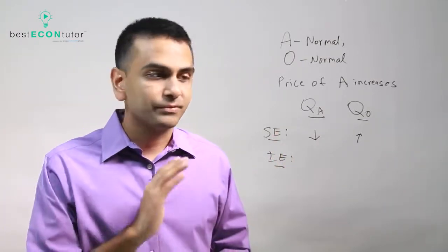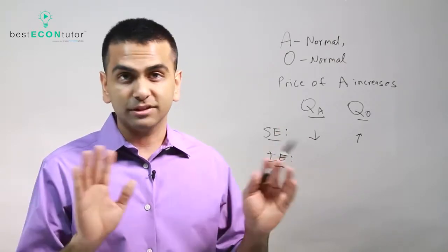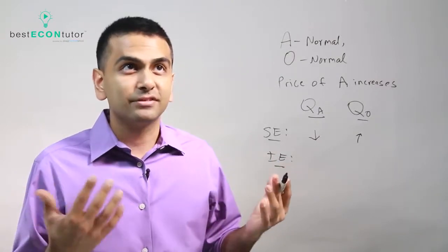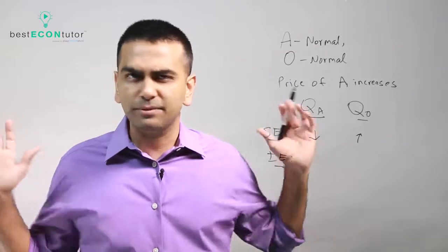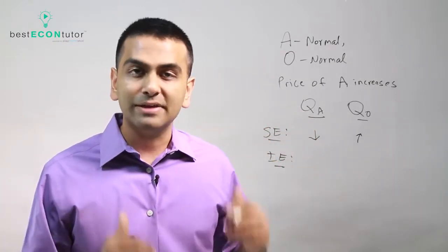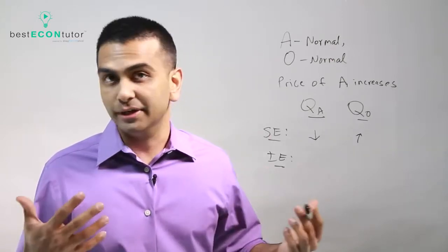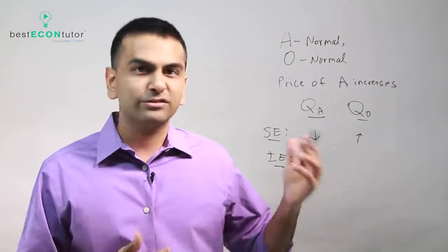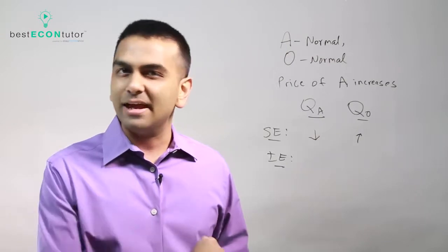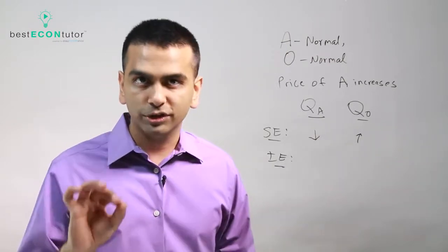The income effect says that when any price goes up, it doesn't matter which good, it's as if you're poorer because you can afford less stuff. So if any price goes up, you're poor, so you want to buy less of every normal good and more of every inferior good. The other way around, if a price goes down, it's as if you're richer, so you'll buy more of every normal good and less of every inferior good, not taking into account at all which good's price changed.